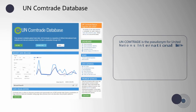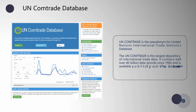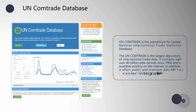UN Comtrade is the pseudonym for the United Nations International Trade Statistics Database. It is the largest depository of international trade data, containing well over 40 billion data records since 1962, and is available publicly on the internet.